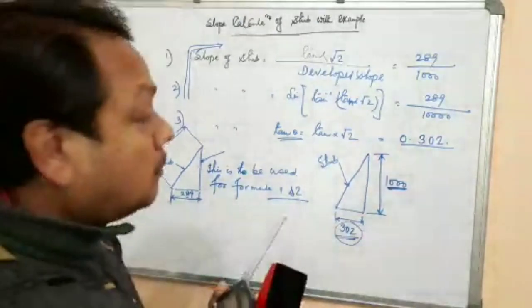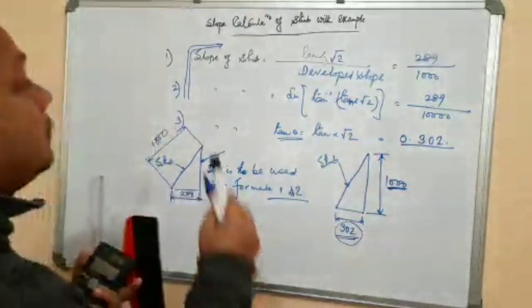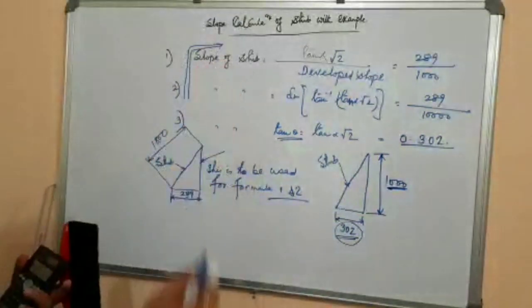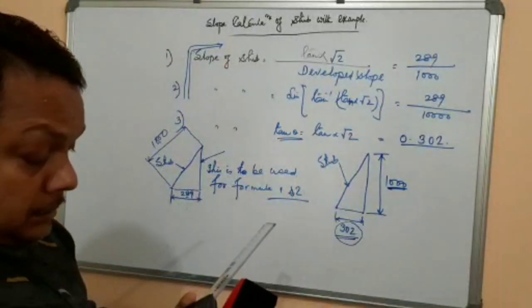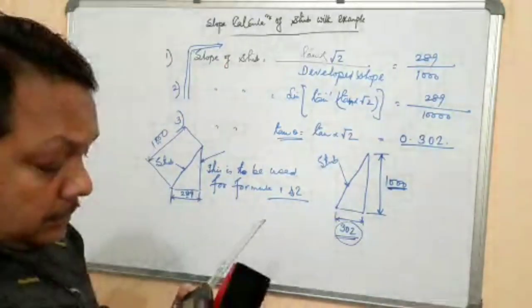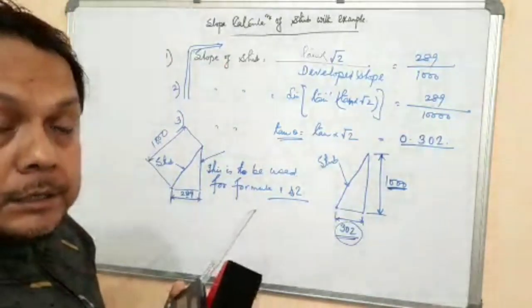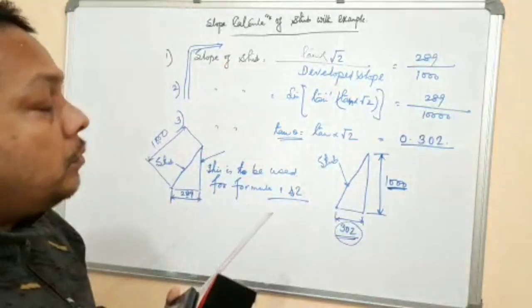So now I think the slope of staff calculation with example in English version has become understandable to you.